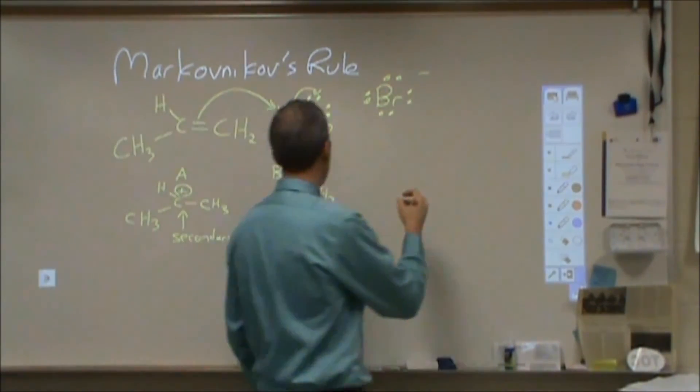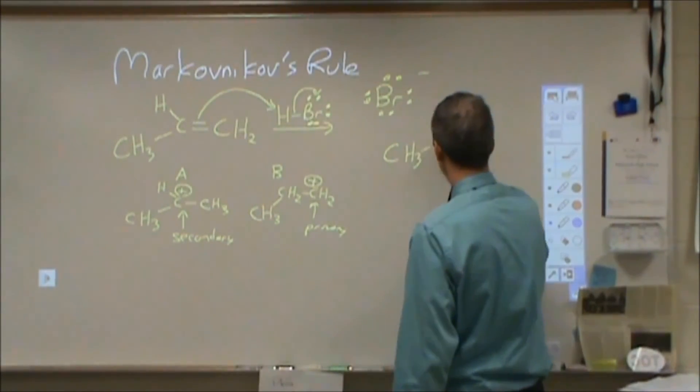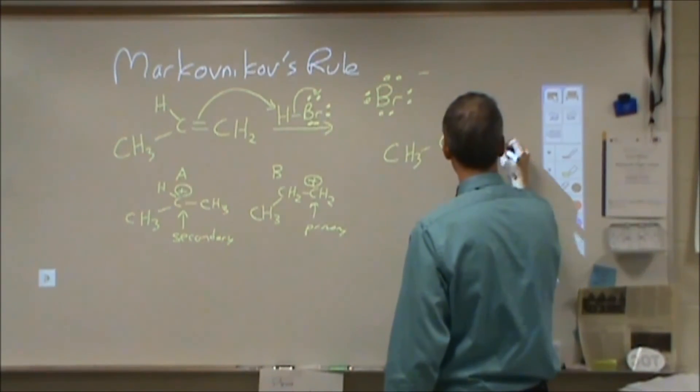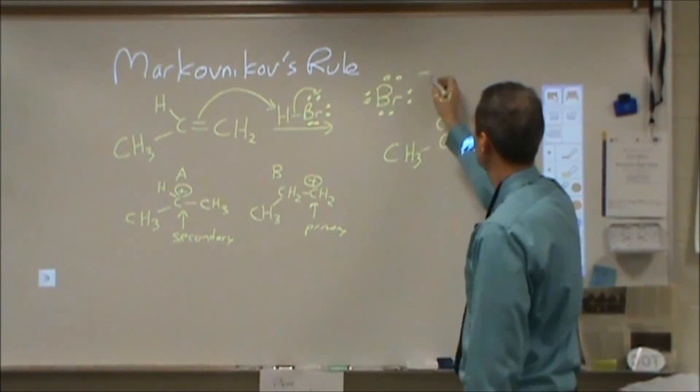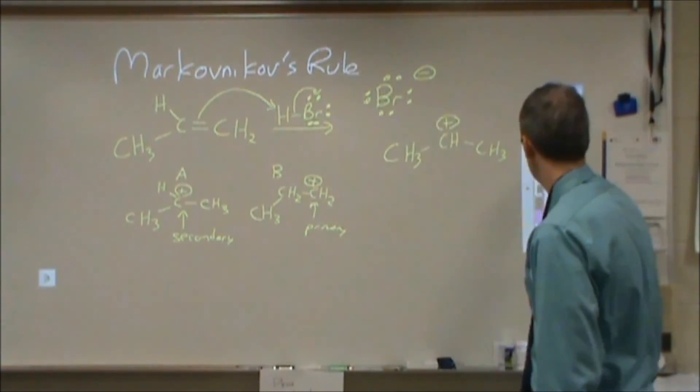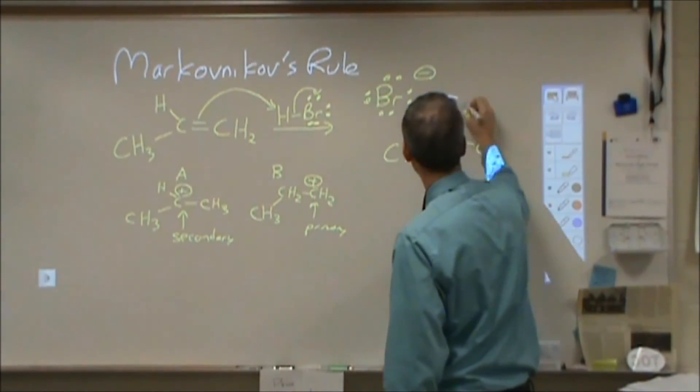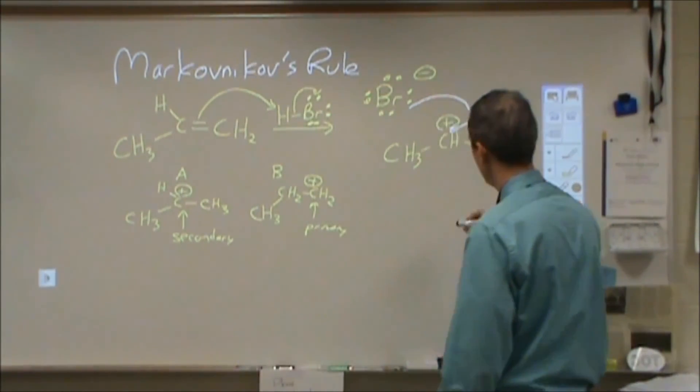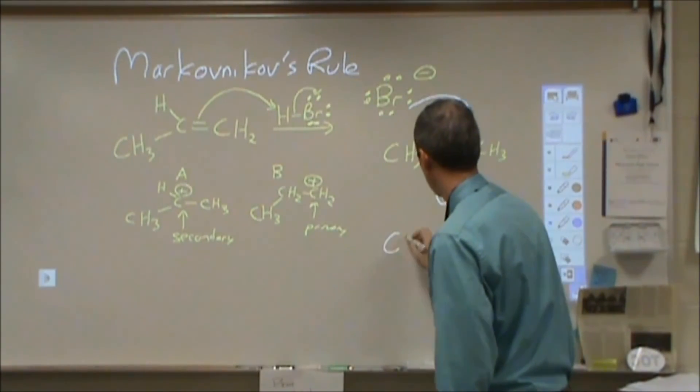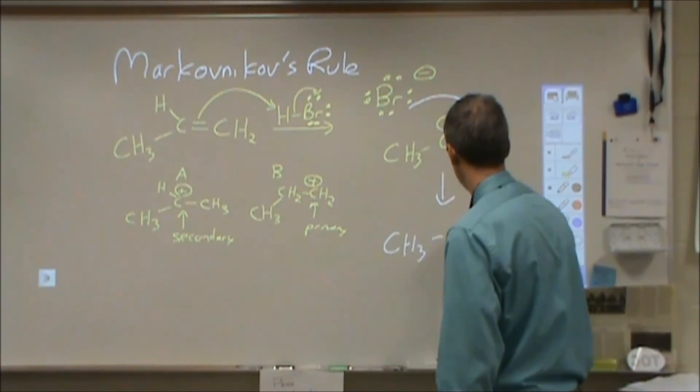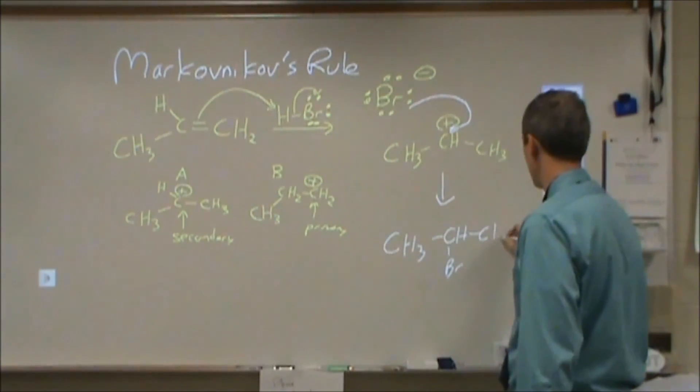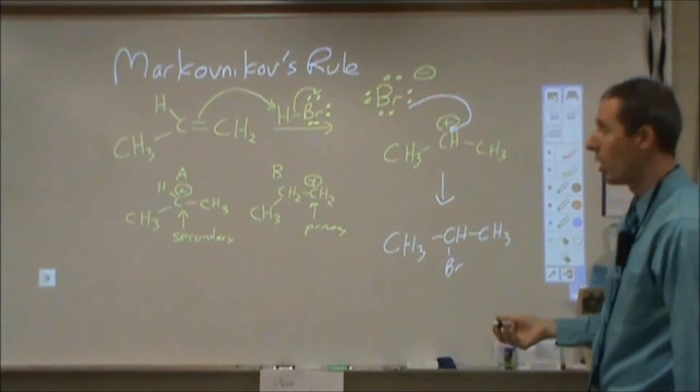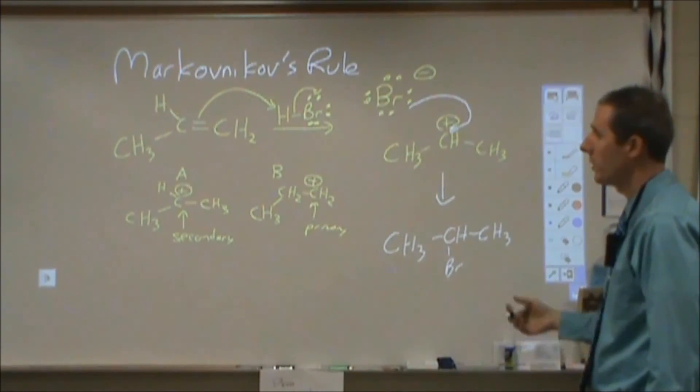So we choose option A: CH3-CH+-CH3 with the positive charge. In the final step, the bromide comes in and forms a bond with that carbon. Our final product is CH3-CHBr-CH3, which is 2-bromopropane. In fact, we would not form 1-bromopropane.